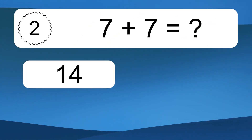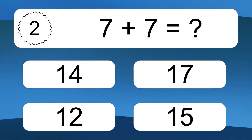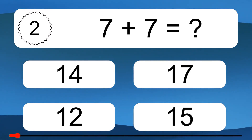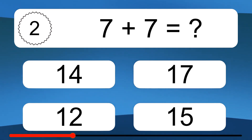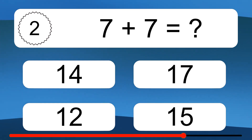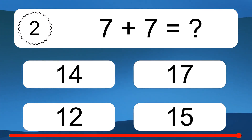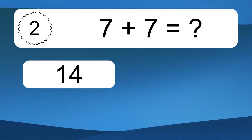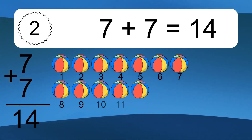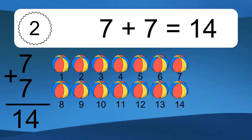7 plus 7 equals what? 7 plus 7 equals 14.